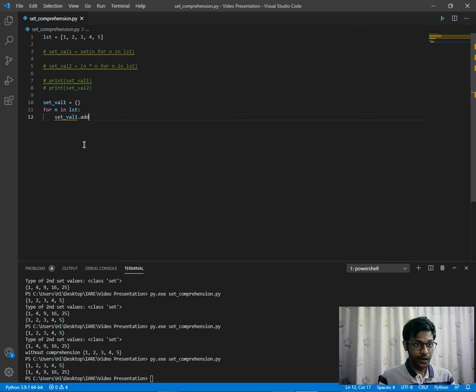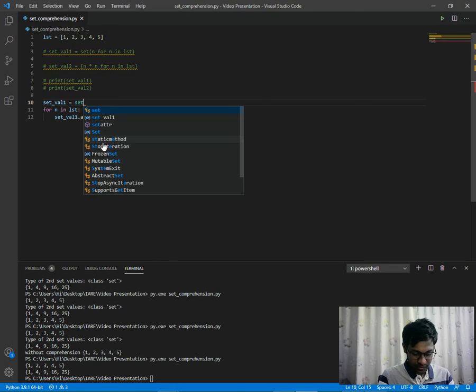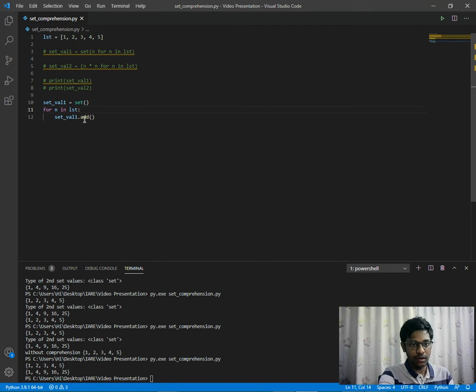set_val1.add - as you can see, add is one of the operations we can do with sets. But here it's considering it as a dictionary because we've represented it with parentheses. This is not a best practice for initializing empty sets. So we'll just go with set(), and now add gets highlighted because this is one of the things we can do with sets.